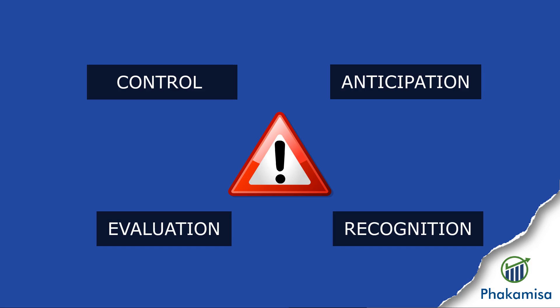So occupational health and safety basically boils down to these four words: the anticipation, recognition, evaluation and control of hazards in the workplace.